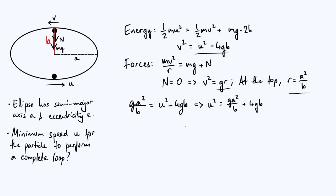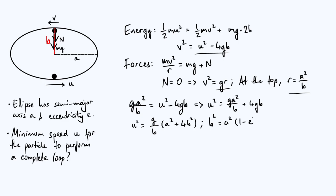Factoring out g/b gives u² = (g/b)(a² + 4b²). Because b was not one of our original parameters, we want to eliminate it using another standard property of ellipses: b² = a²(1 − e²). Expanding the brackets gives b² = a² − a²e².